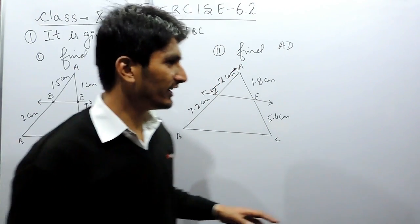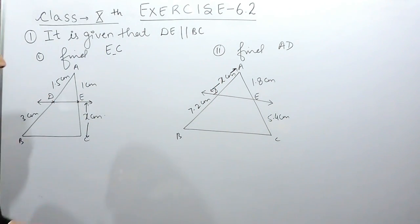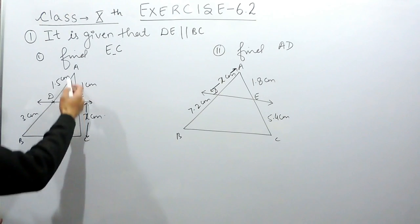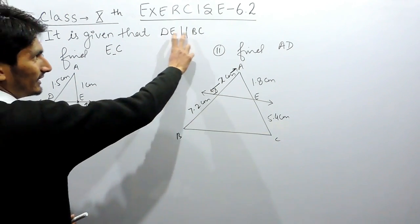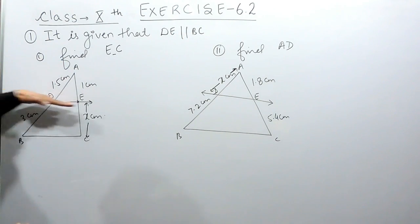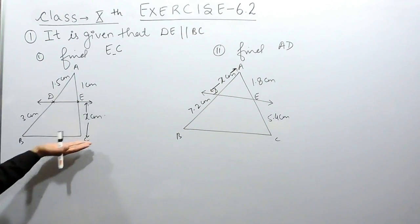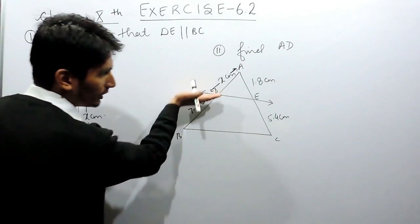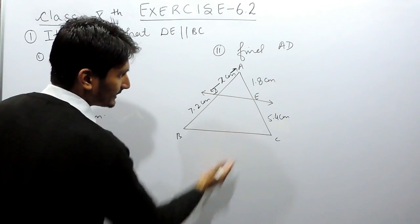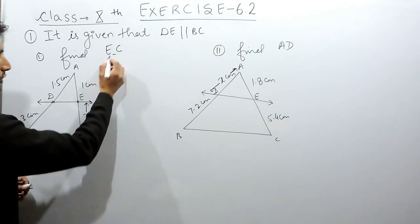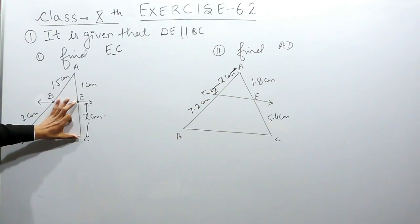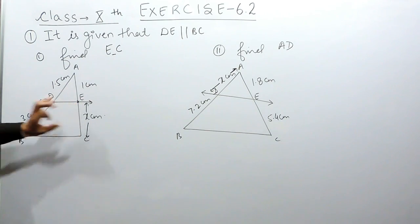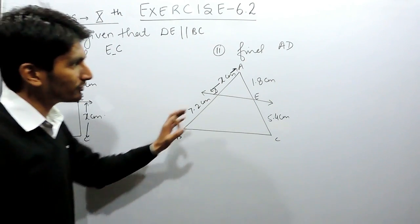In this video we are going to solve question number 1 of Exercise 6.2. Two triangles ABC are given, and in both triangles DE is parallel to BC. In the first case you have to find the value of EC — the length of that portion. In the second case you have to find the value of AD.